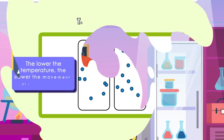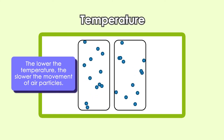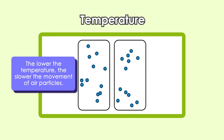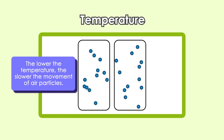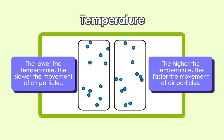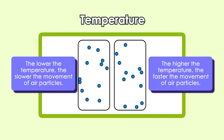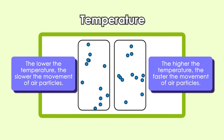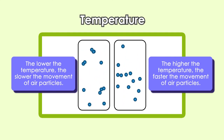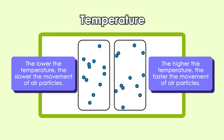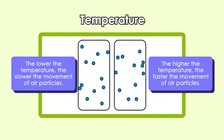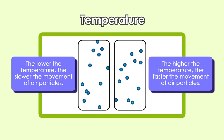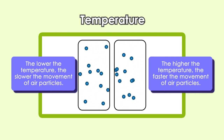The second factor is temperature. When the air temperature in a closed container increases, the air particles move faster. This causes the air particles to collide with the walls of the container more frequently and with a greater force. Therefore, the air pressure in the container increases.